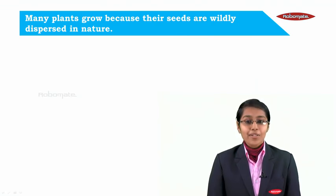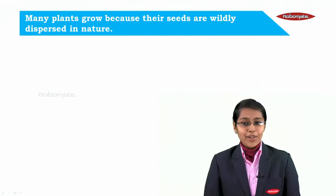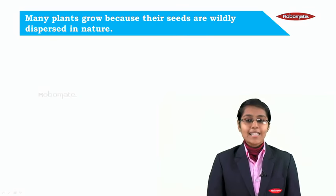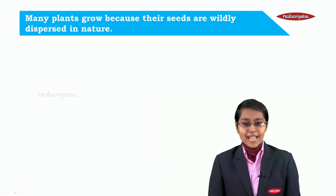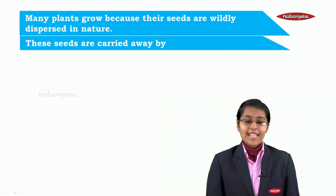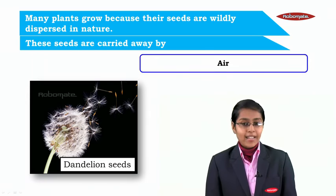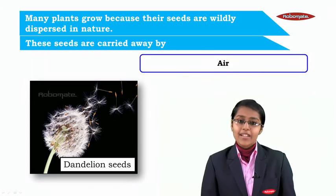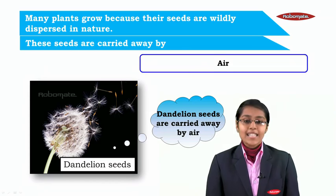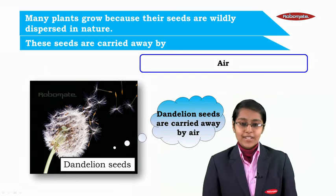Many plants grow because their seeds are widely dispersed in nature. These seeds are carried away by air. In the picture you can see dandelion seeds carried away by air.